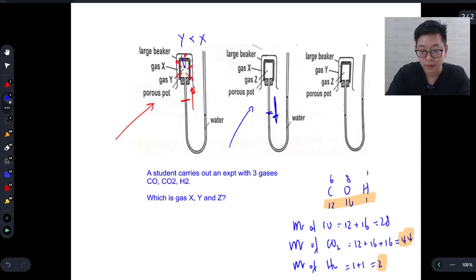This water level here has dropped. And the reason why that happens is because the pressure inside the porous pot has increased and that is achieved when gas X diffuses in much faster than gas Z can diffuse out. So X less than Z.